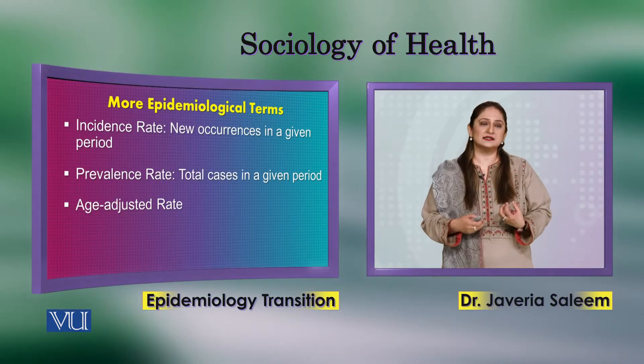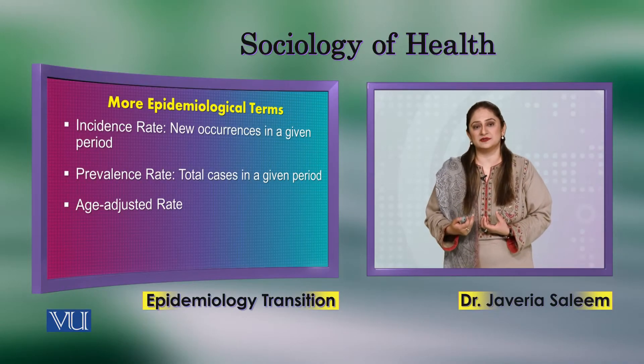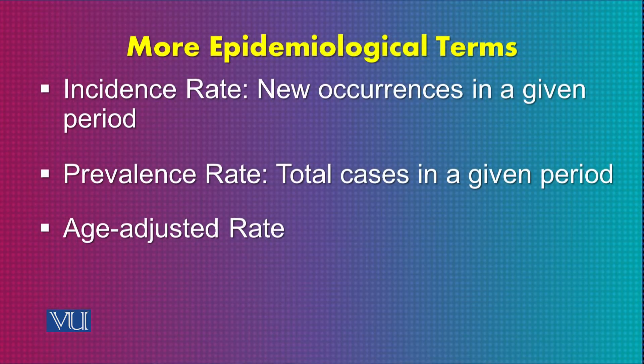There are certain other epidemiological terms: incidence rate, prevalence rate, and age-adjusted rate. Incidence rate refers to new occurrences of a disease in a given period, while prevalence is the total cases in a given period. Age-adjusted rate tells us which age group is more affected — children, adults, or middle-aged — and health professionals use this for specific diseases in specific areas.